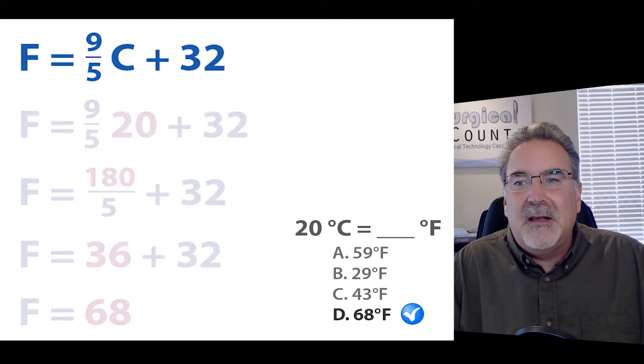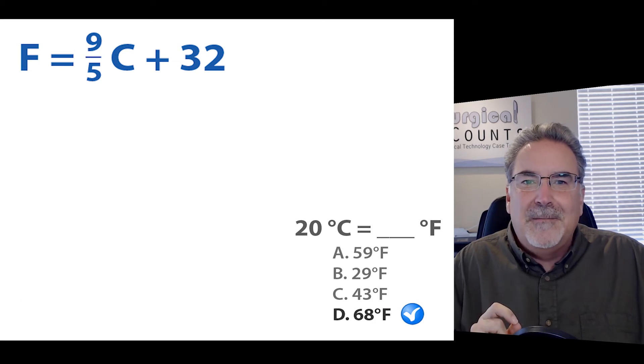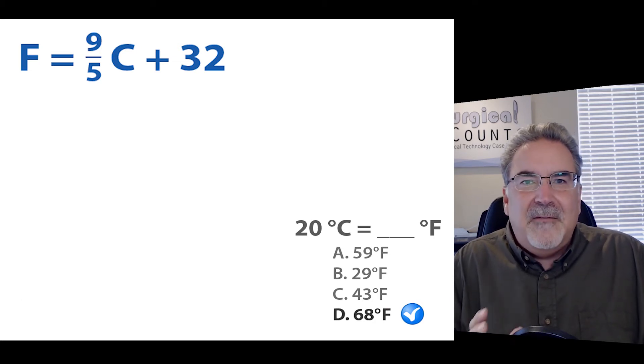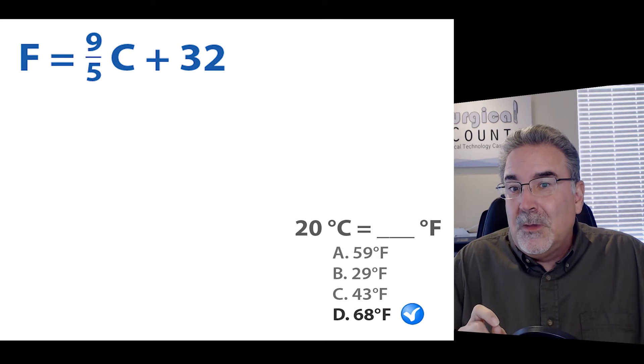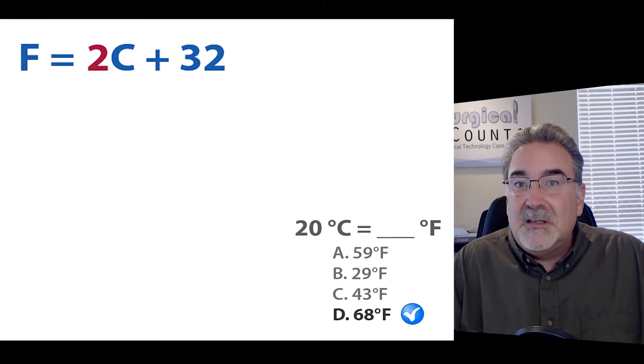So let's tackle the accurately doing the math part first. We'll do that by simplifying the equation just a little bit. Now, 9 fifths is almost 2. So we can swap out 9 fifths for 2, and we get F equals 2C plus 32.